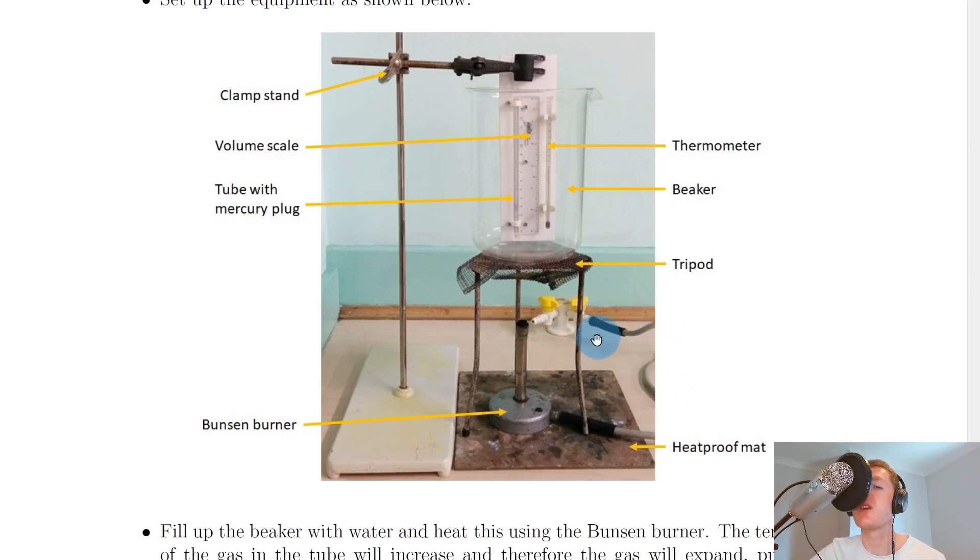In simpler terms, you change the temperature of the water in the beaker. In even temperature steps you note down where the mercury plug was on the volume scale and note your volume readings—you're changing the temperature and measuring the volume.